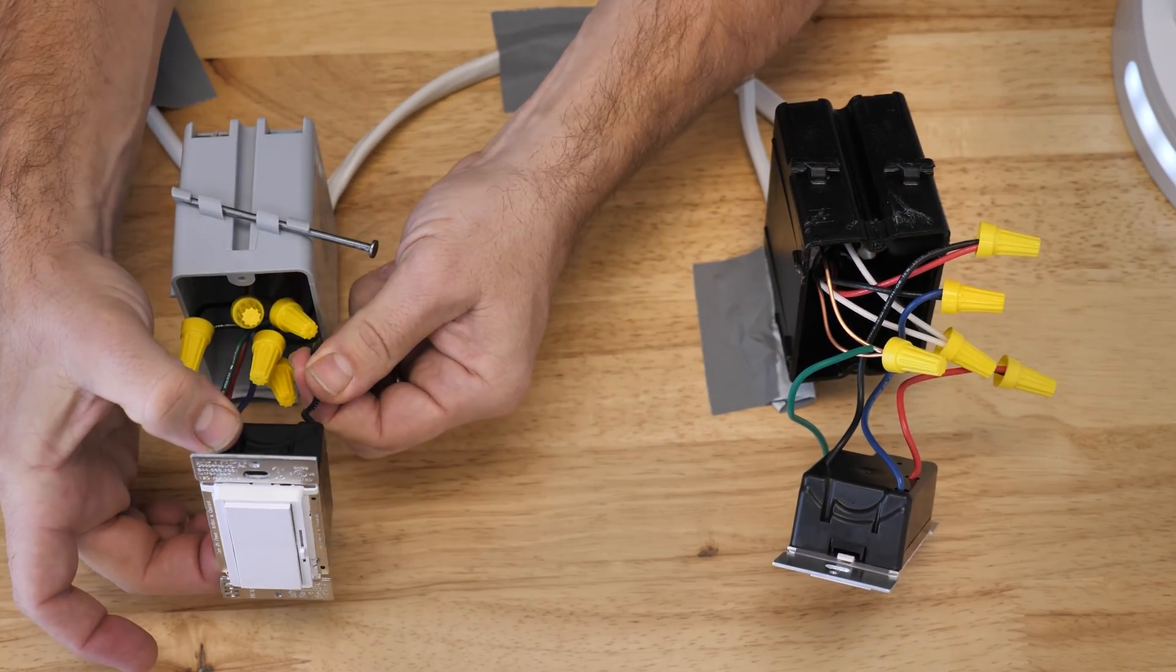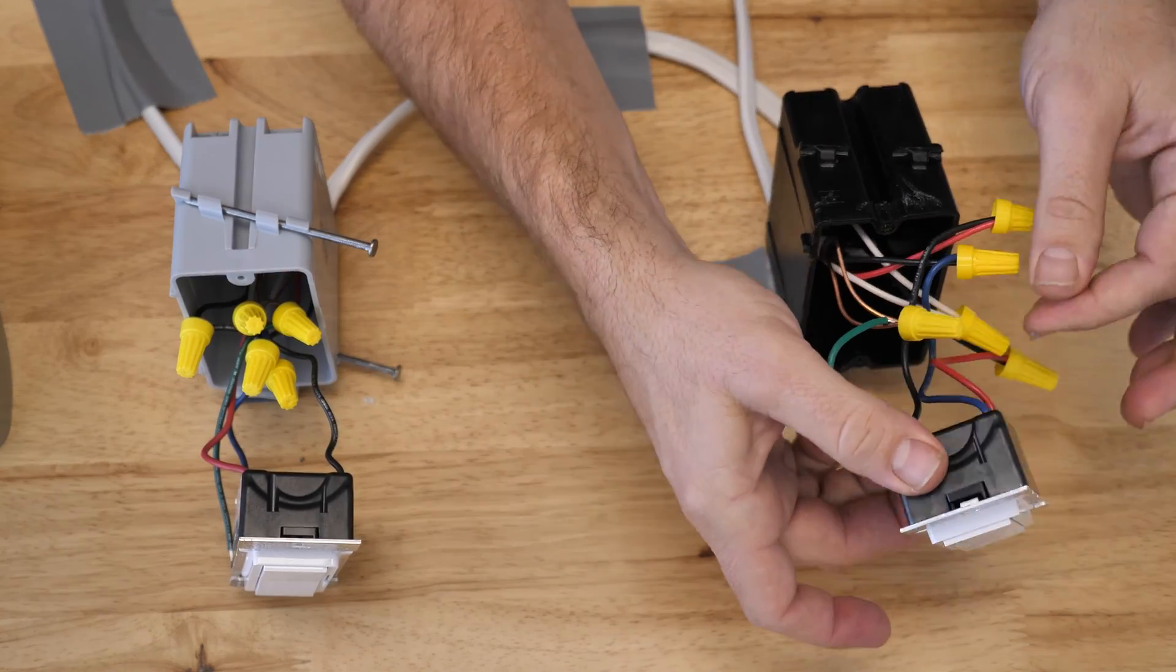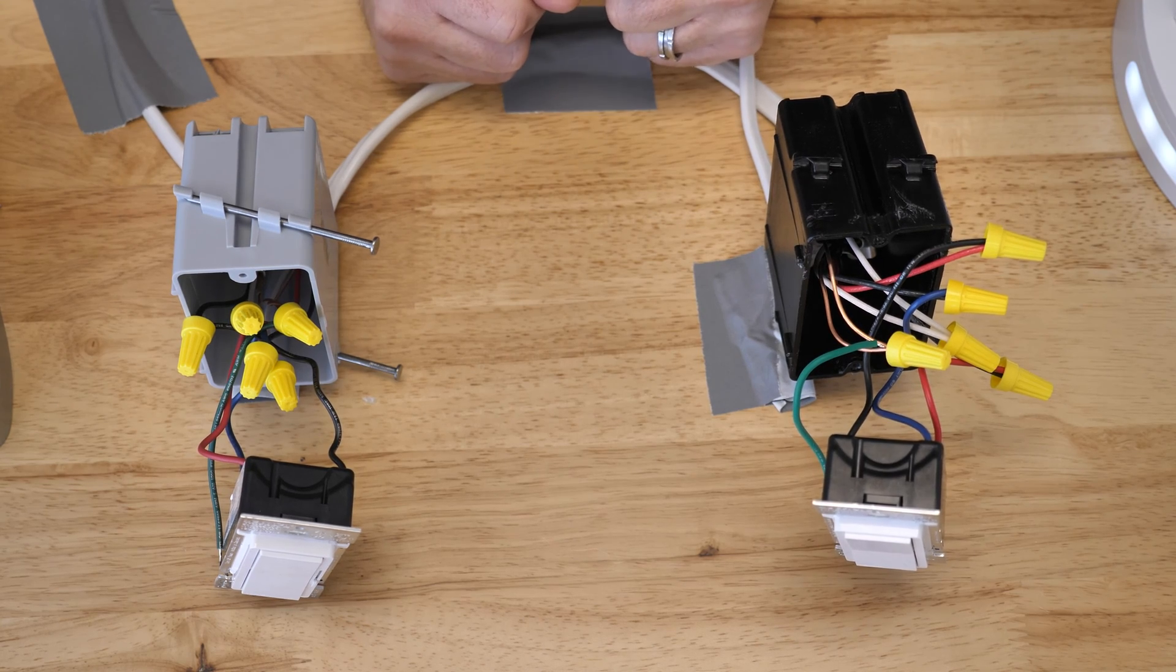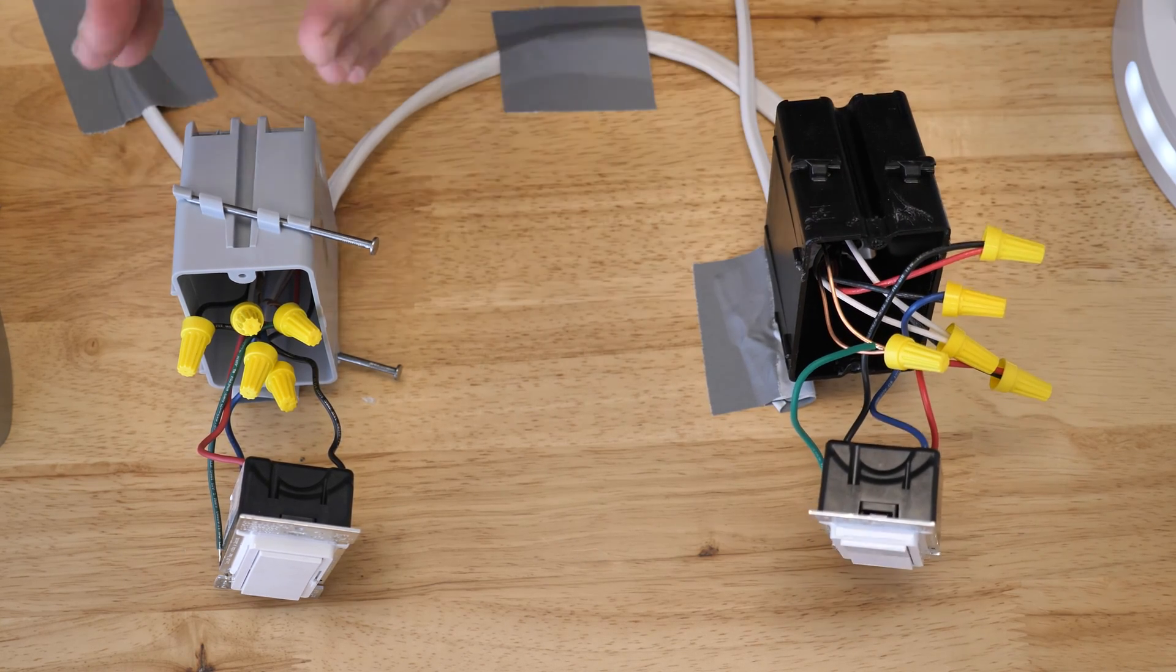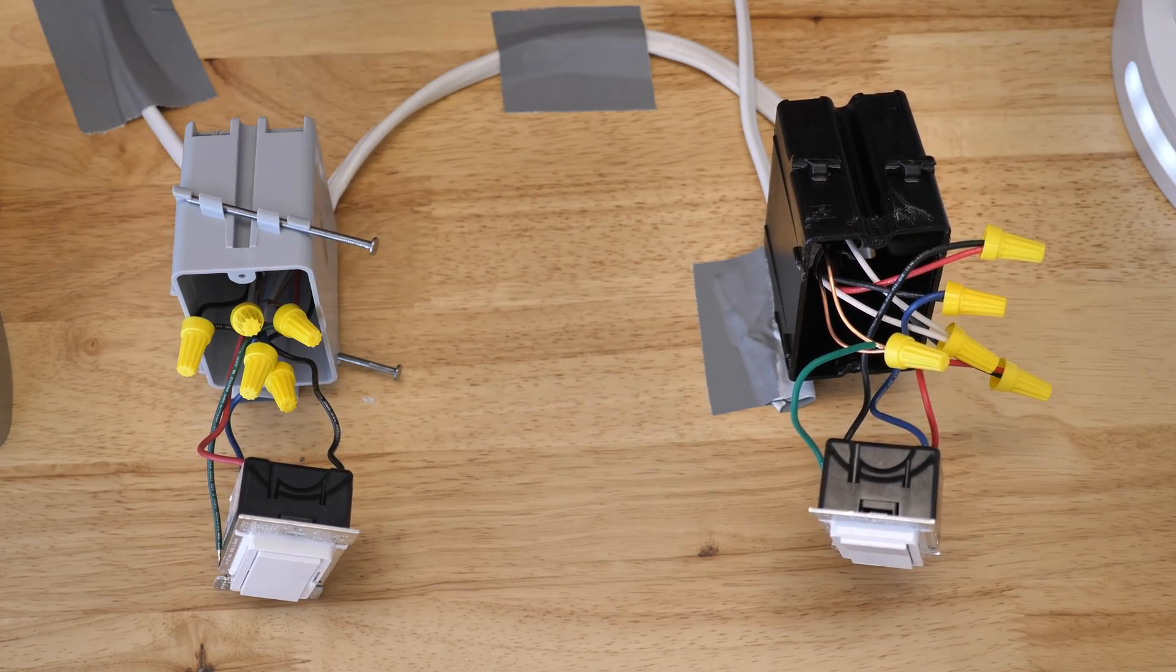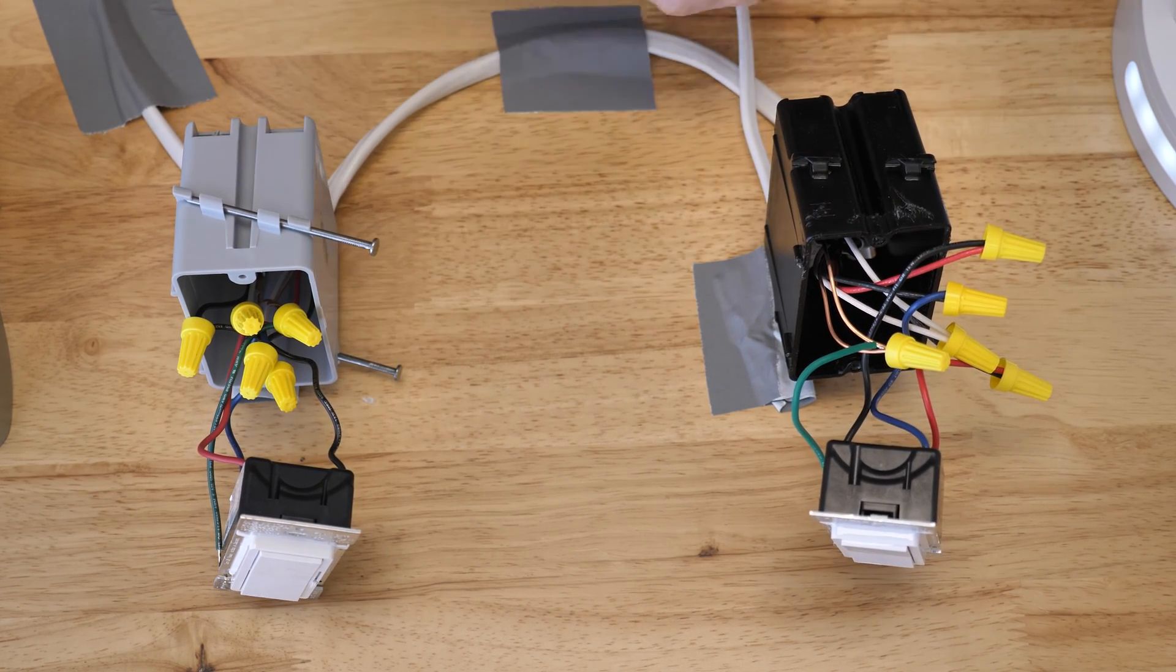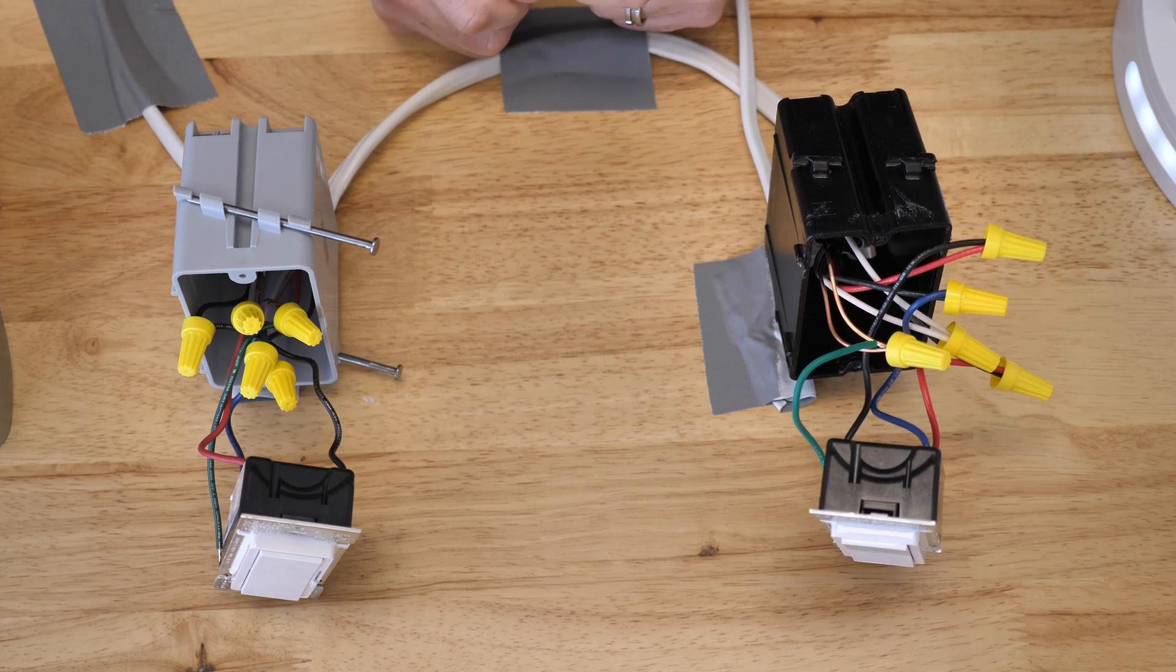Just remember, it's always going to be power in on the main control, and then switch leg out to your light on the other control. The great feature about Lutron is you can actually bring the power in either side, the switch leg out either side. That will work just fine. It does not matter which direction these units are installed in.